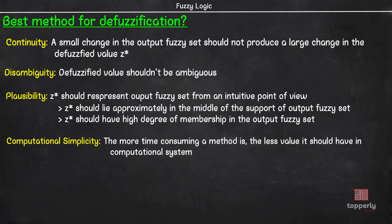The fourth criterion is computational simplicity. This criterion suggests that the more time-consuming a method is, the less value it has. For instance, the height method, the mean-max method, and the first or last of maxima methods are faster than the centroid or center of sums methods. The last criterion is weighting method, which is again highly problem dependent. Based on the problem at hand, you have to decide which weighted method to use.